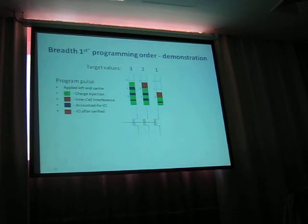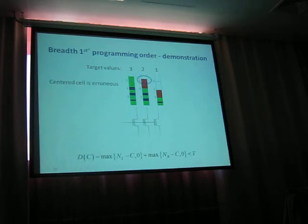We keep on programming the left-hand cell to level 3, and we give another pulse, and now we see that the center cell is also facing intercell interference after it's been completed and verified. The left-handed cell didn't still reach level 3, so we give another program pulse. And oops, the center cell passed level 3.